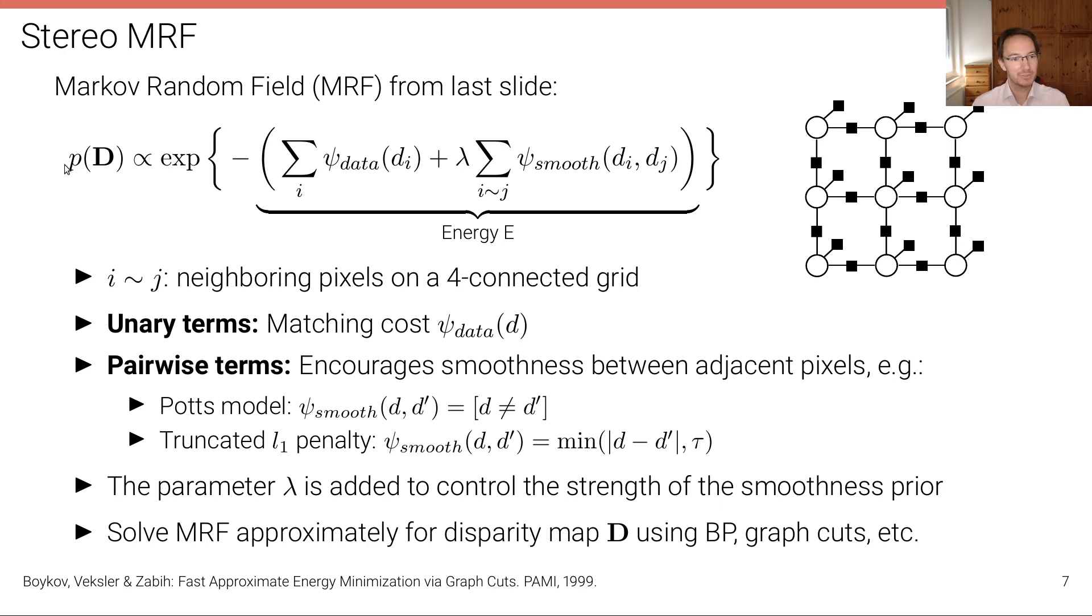So, we can solve now this MRF using, for example, the belief propagation, the max-product belief propagation algorithm that we have discussed in the last lecture, in order to obtain a maximum a posteriori solution which corresponds to the most likely disparity map, at least approximately. It's an approximate algorithm, we obtain the most likely disparity map under this model. And there's other algorithms that have been used, like graph cuts, which we don't have time to go into detail here, but which also provide a solution to this MAP problem, which also minimize this energy.